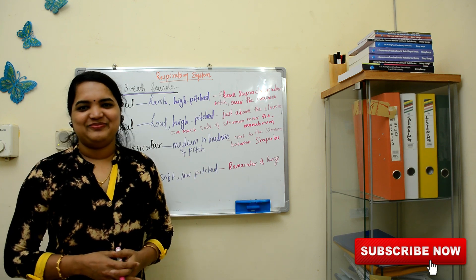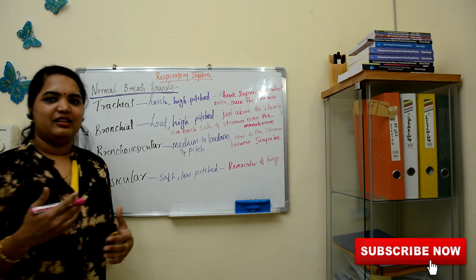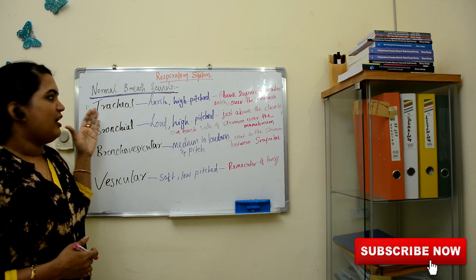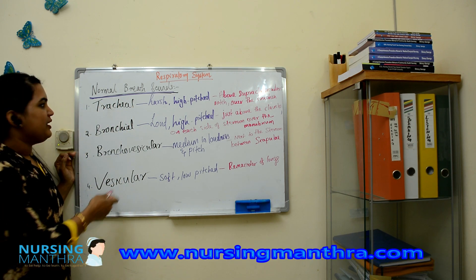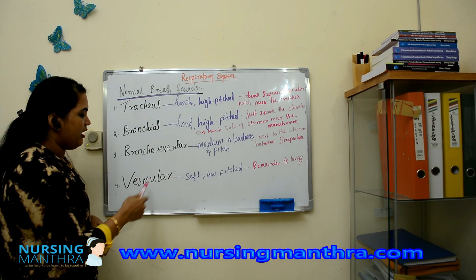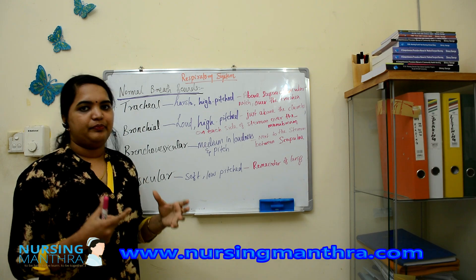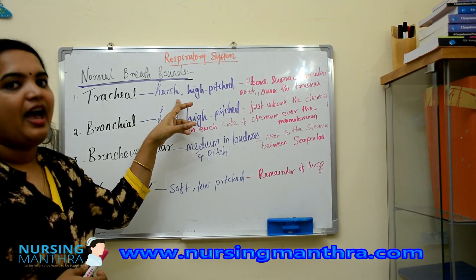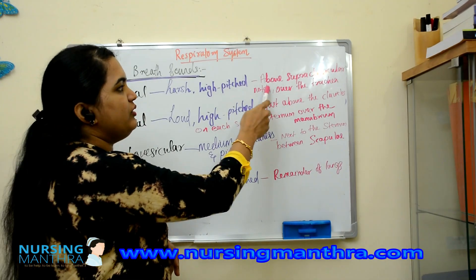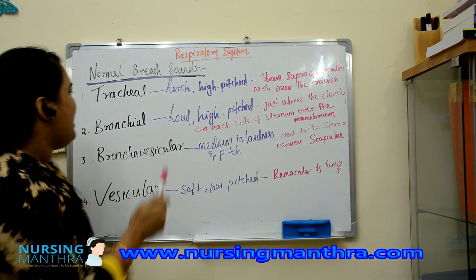Today we will start with the respiratory system. The basic assessment is breath sounds. There are mainly four normal breath sounds: the first is tracheal breath sound — its quality is harsh and high-pitched, and it can be located above the supraclavicular notch over the trachea. The second is bronchial breath sound.